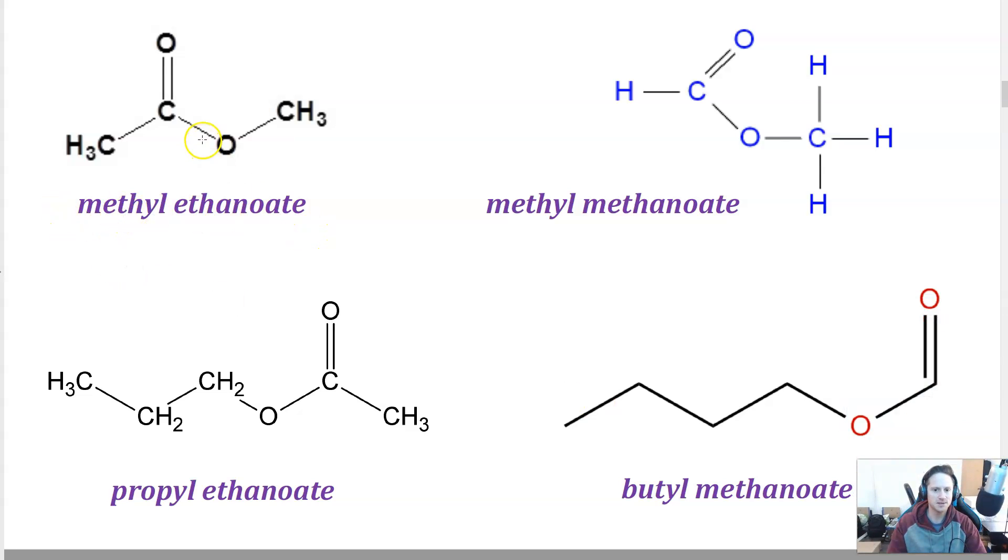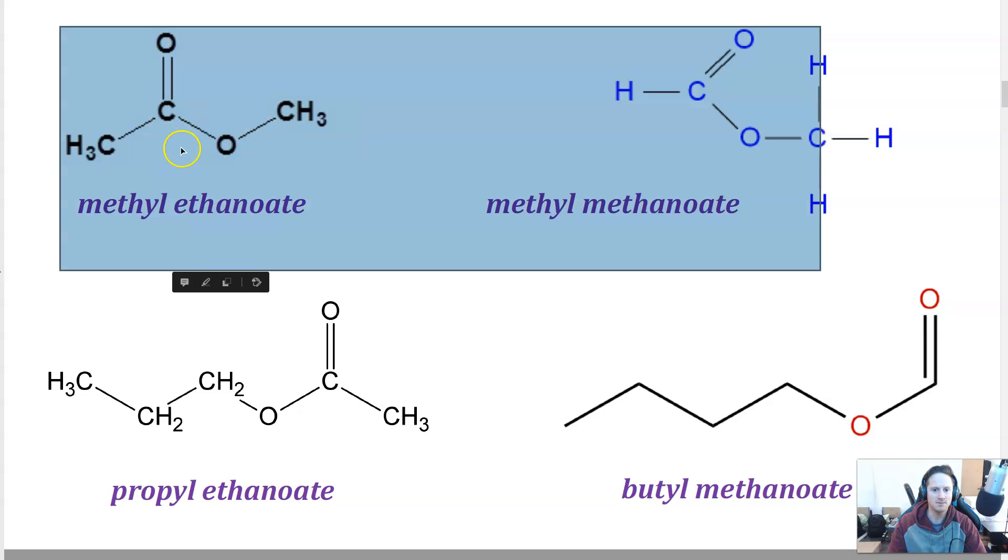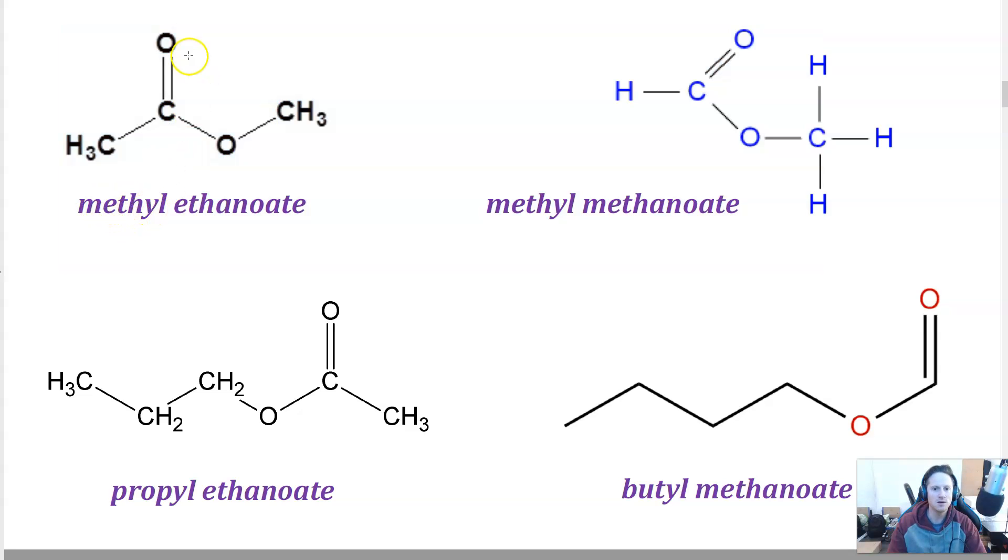So that's going to be methyl ethanoate. So again, you want to identify that it's an ester, looking at this functional group here. And then you look at this oxygen and then you count the number of carbons and that's the alcohol component. So one carbon would be meth, so that makes methyl. And then the other side, you've got one, two carbons from the carboxylic acid. So that's ethanoic acid, so that's going to be ethanoate.